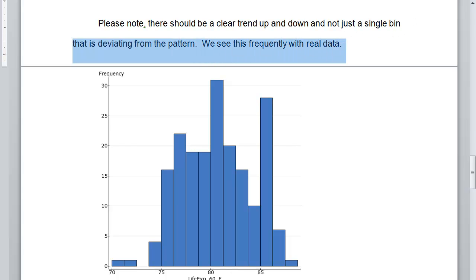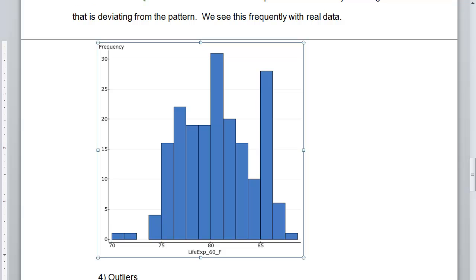Here is some life expectancy data I've been using in some of my videos. And as you can see, there is a clear trend up and a clear trend downward. But some students want to call this a mode because it's poked up. But this is really not a trend. The general trend would be up toward this mode and downward. And this I would not consider a mode.